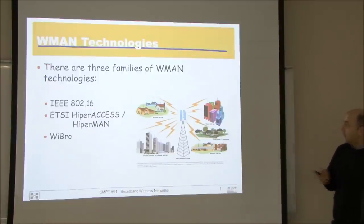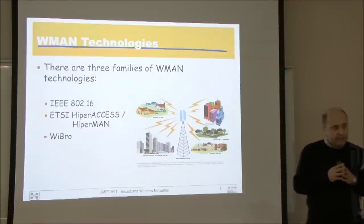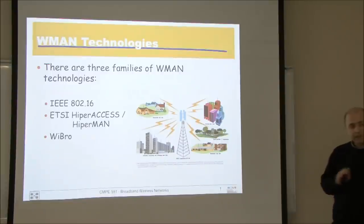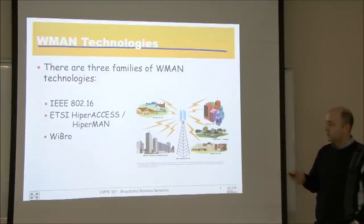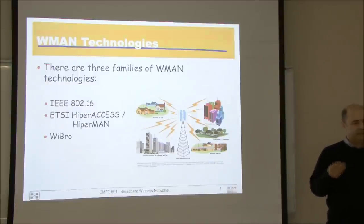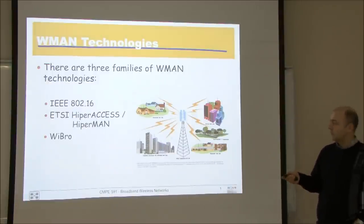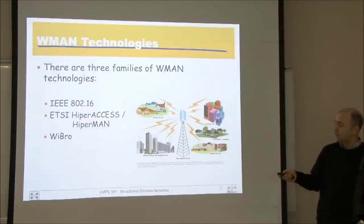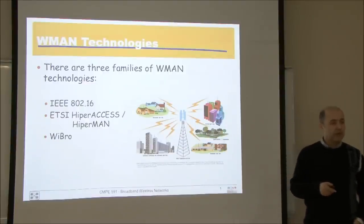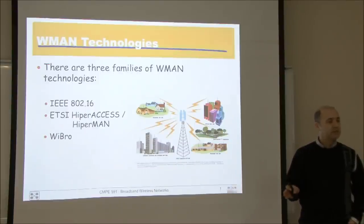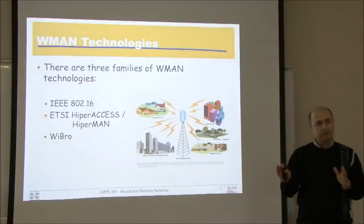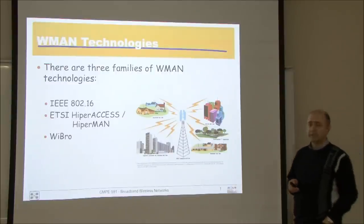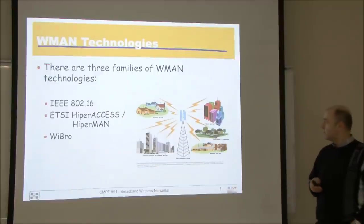When we look at wireless metropolitan area networks in general, these technologies could be classified under three groups. One is IEEE 802.16, which is WiMAX. The other is the ETSI class — HyperAccess and HyperMAN. And the other is Vibro, which relates very closely to WiMAX but is not WiMAX. It's actually a snapshot of WiMAX taken with some modifications — an early implementation of WiMAX.